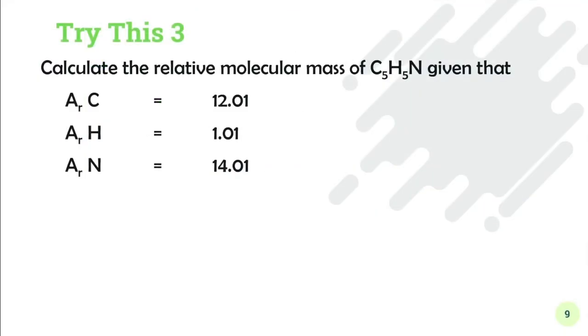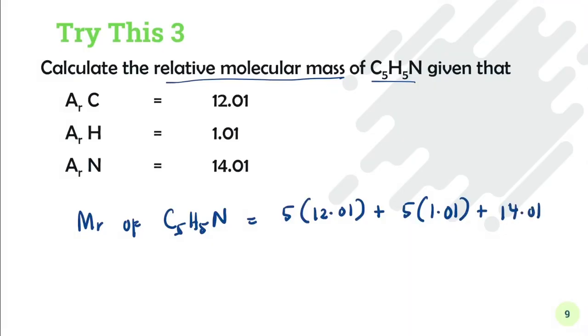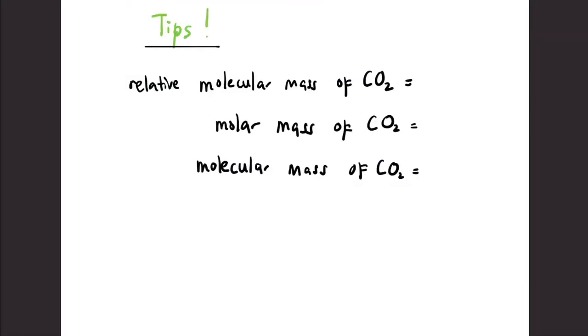Now let's try this question: Calculate the relative molecular mass of C5H5N given Ar values. So Mr of C5H5N equals 5 times 12.01 for carbon, plus 5 times 1.01 for hydrogen, plus 14.01 for nitrogen. The total is 79.11, and no unit again.